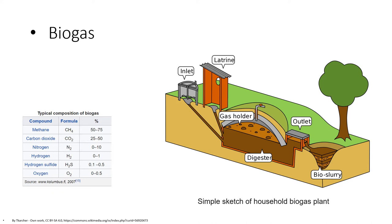Here is presented a simple sketch of a household biogas plant. Biogas is primarily methane (CH₄), carbon dioxide (CO₂), nitrogen, hydrogen, hydrogen sulfide, and oxygen in small amounts. It also contains moisture and siloxanes. The gases methane, hydrogen, and carbon monoxide can be combusted or oxidized with oxygen. This energy release allows biogas to be used as a fuel.